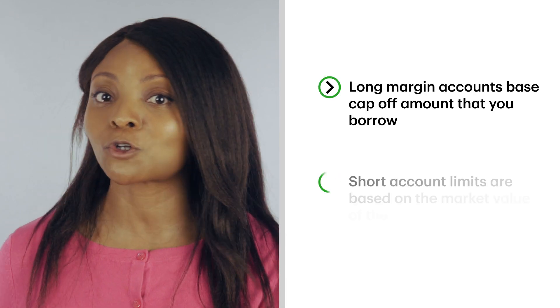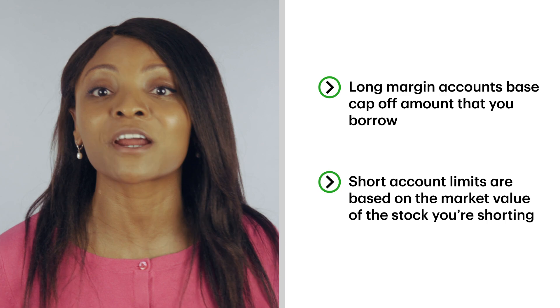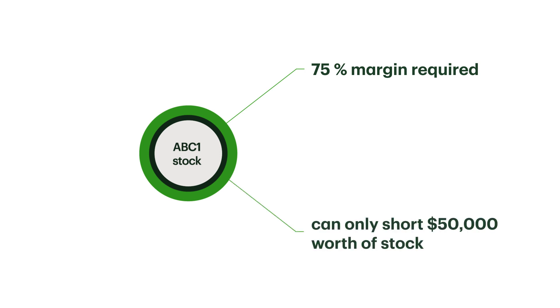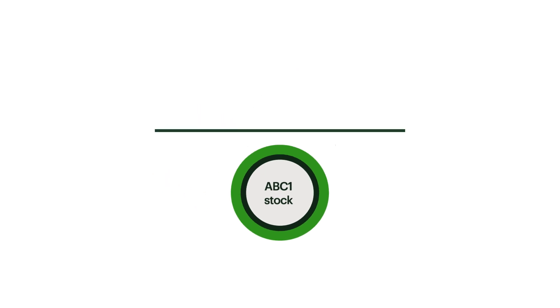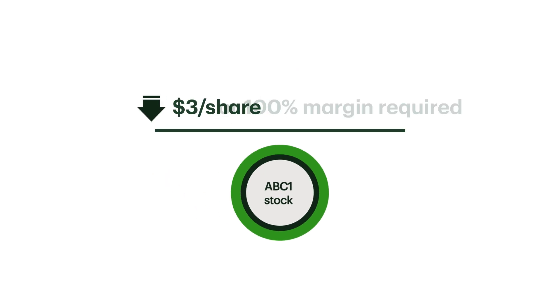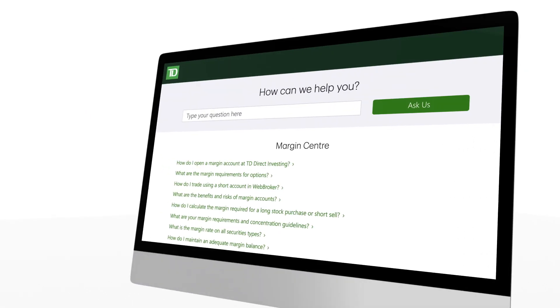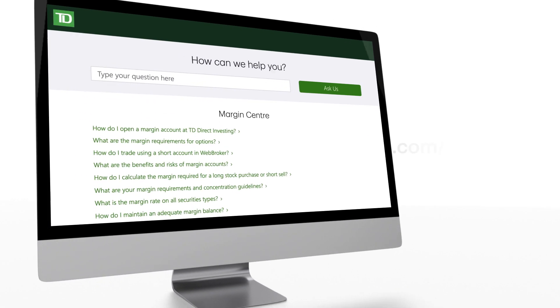One thing to note is that there's a limit on how much you can short, just as there's a limit on how much you can buy with margin. Unlike a long margin account where the cap is based off of the amount you're borrowing, for a short account the limit is based off of the market value of the stock that you're shorting. For example, a stock with a 75 percent margin requirement only allows you to sell fifty thousand dollars worth of the stock. Any stock trading under three dollars a share, or that has a hundred percent margin requirement, can't be shorted. Check out the short concentration guidelines for details.